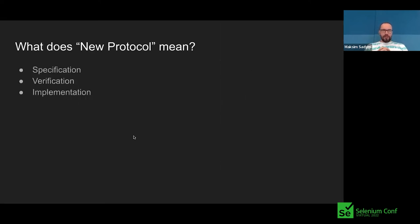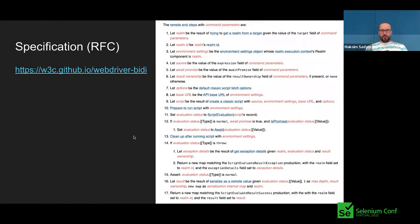Let's talk about what a new protocol means. We see the new protocol as something which is specified, has a way to verify it, and is implemented. What does 'specified' mean? The current version of the specification you can find by this link. Here is an example of a command — script evaluate — and there are steps that any server which wants to implement the WebDriver BiDi server has to follow when it receives that command.